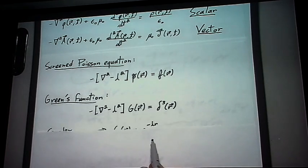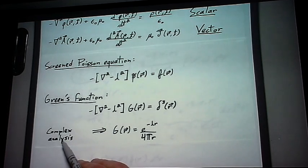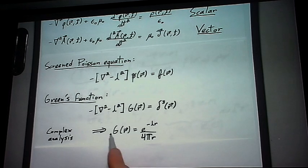So that's simple enough. Now, we won't go into the nitty-gritty of complex analysis in order to solve this, but I can assure you the solution to this differential equation is e to the minus lambda r over 4 pi r.